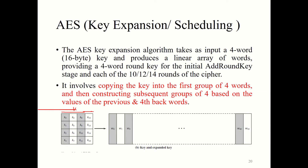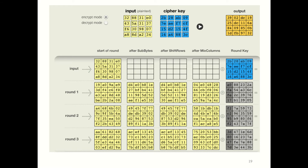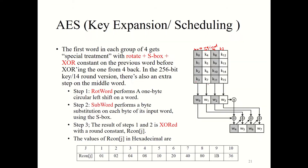If I go back here, you can see this is the first key used in the initial round. When you start the rounds, we have a different key. We take each word separately, and then this word goes into the G algorithm.